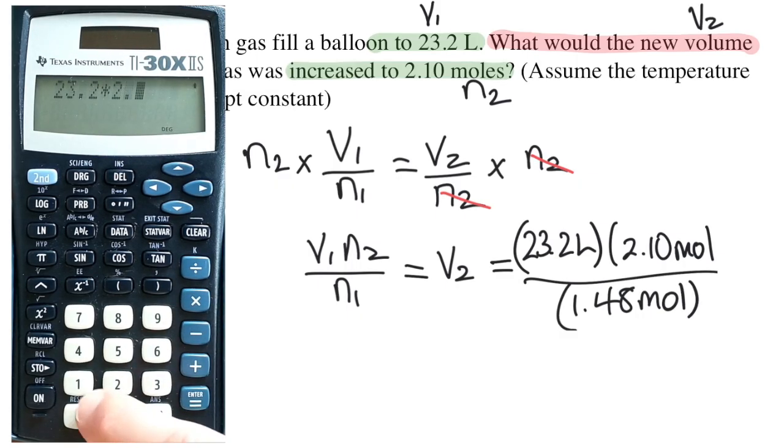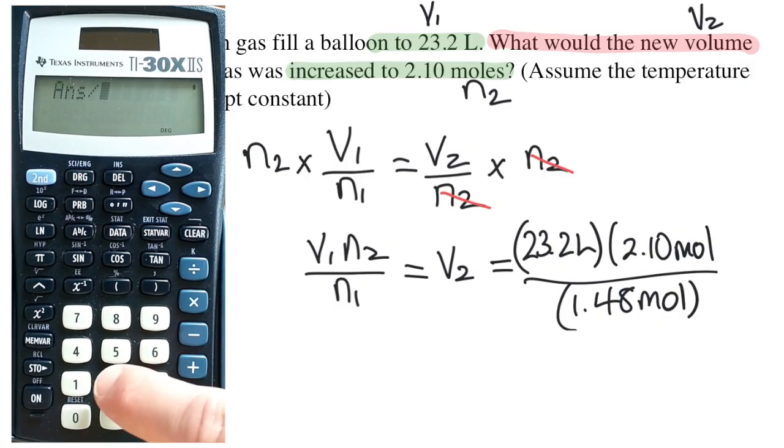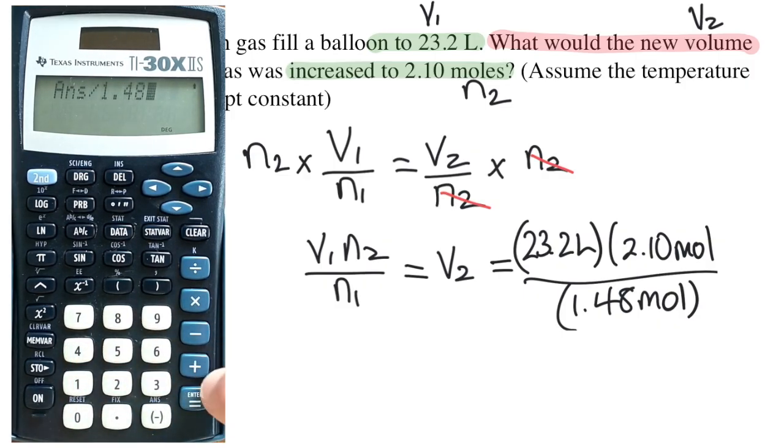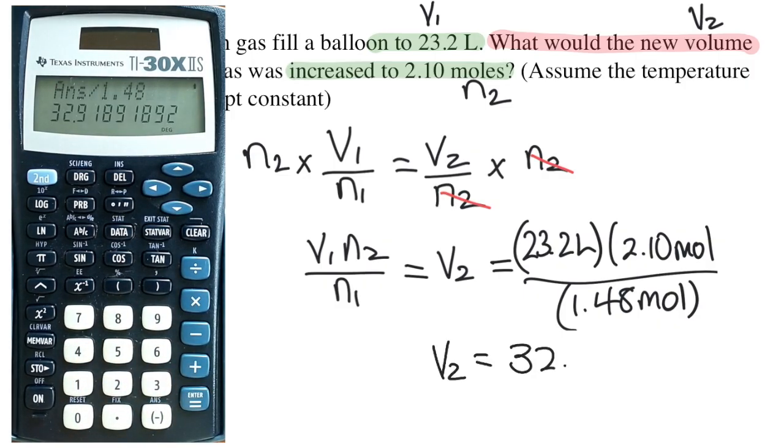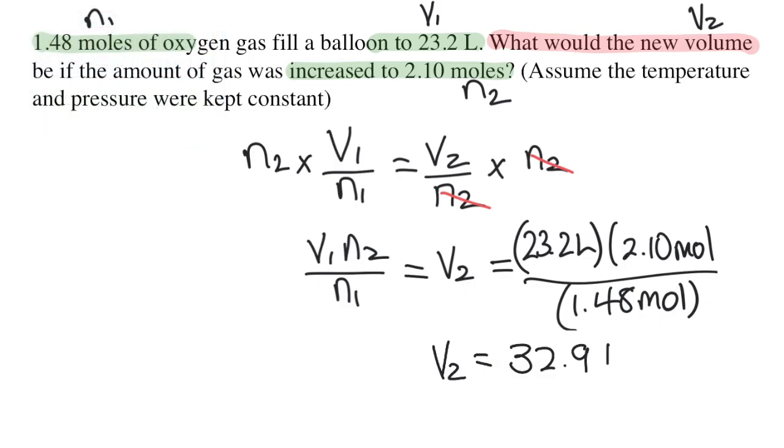I'll plug all of this into my calculator. 23.2 times 2.10, and then I'll divide that by 1.48. I'm going to round my answer to three digits because each of the given variables has three significant digits. And so my answer is 32.9, and the unit is liter because liter is the unit for volume.